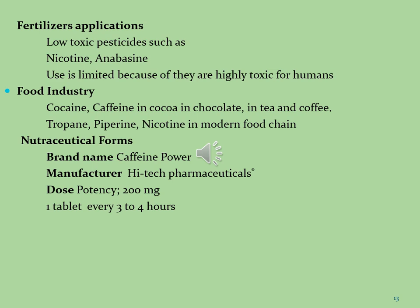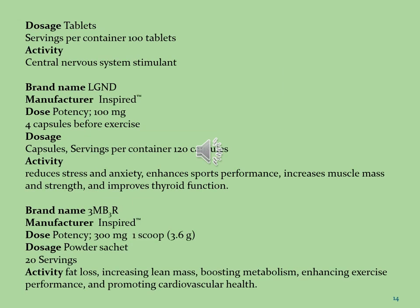We will now discuss the nutraceutical forms — which kinds of phytoconstituents and crude herbs are commercialized into different brands of the pharmaceutical sector. The first brand is Caffeine Power, manufactured by Hi-Tech Pharmaceuticals, dosed at 200 mg per tablet, one tablet every three to four hours. It is formulated in tablet dosage form, with 100 tablets per container, and is used to stimulate the central nervous system.